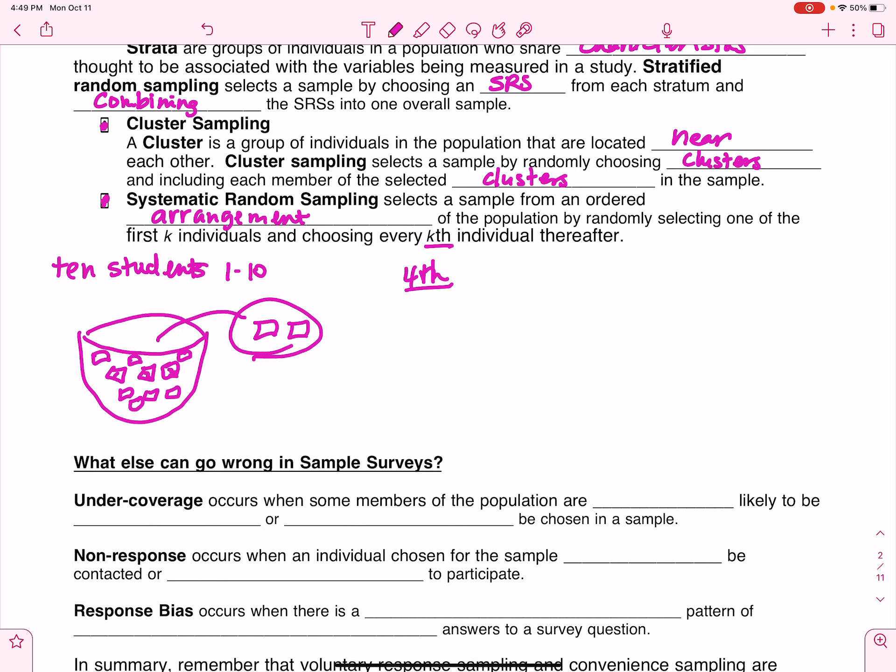Okay, so fourth period's got 30 kids in it. So I've got everybody, all the way down to 30. And let's say I randomly choose number two. I wouldn't just choose it. I would use my calculator. Anyway, that would be my random choice right there. And then I would choose that kid and like every fifth kid after that. So that's what a systematic random sample would look like.